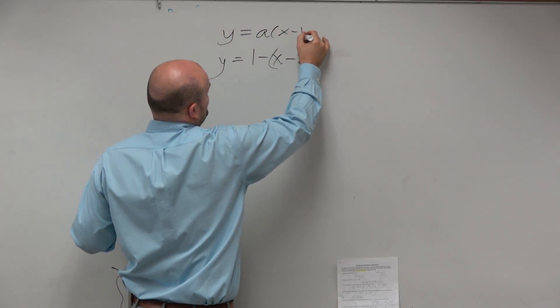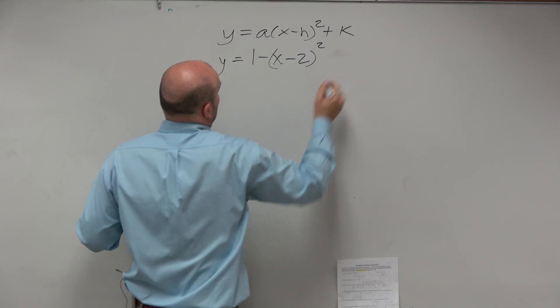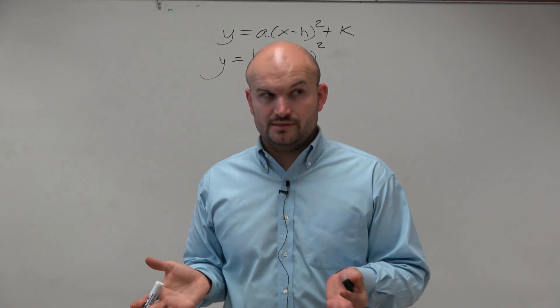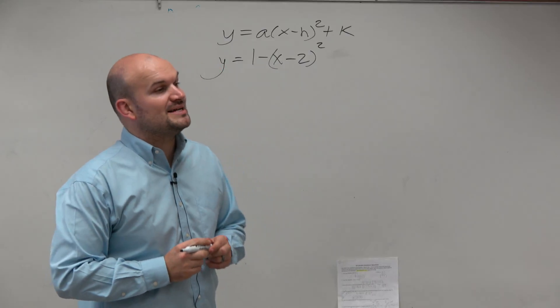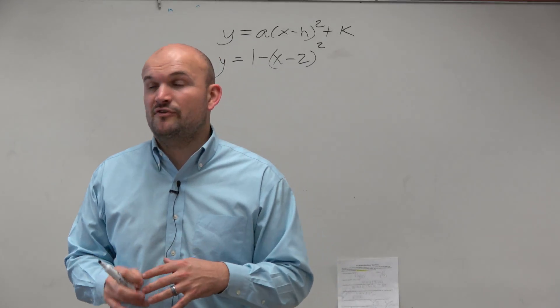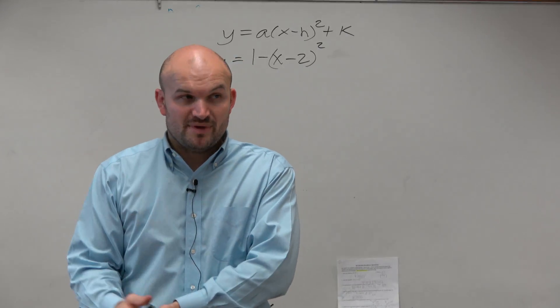First of all, we know that this is in the form y equals a times x minus h squared plus k. Agreed? All right, now all I'm asking you to do is complete the square and then identify the vertex, and if that vertex is the max or if it's a min.